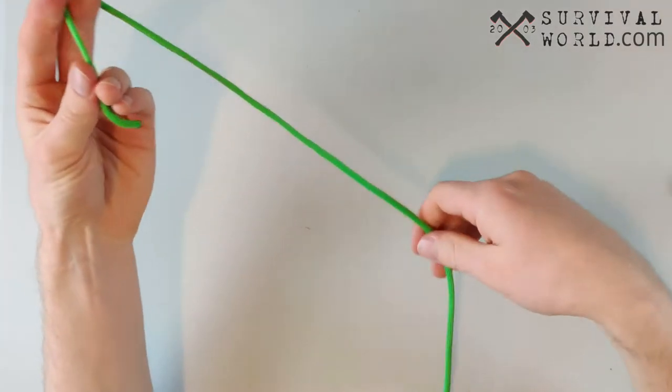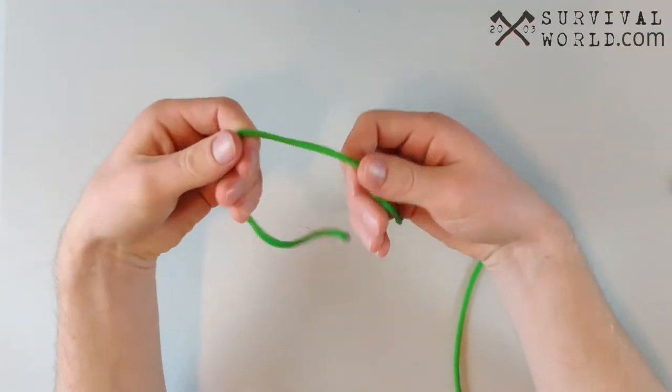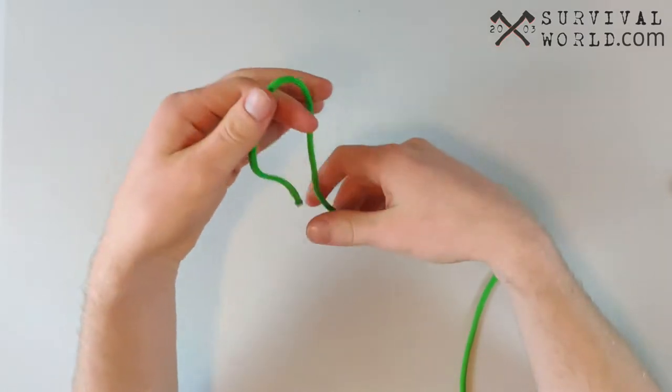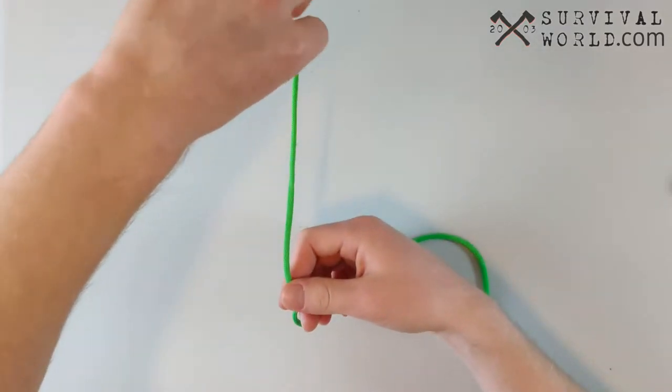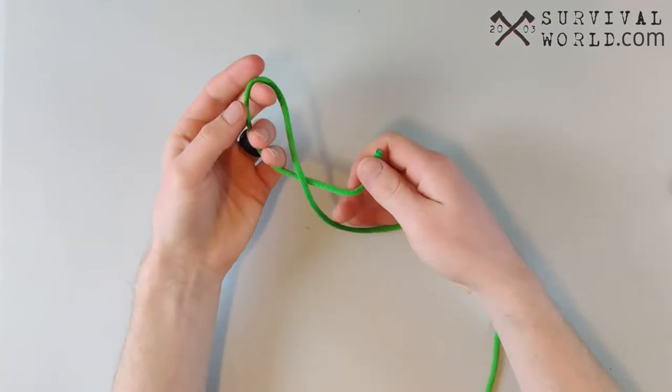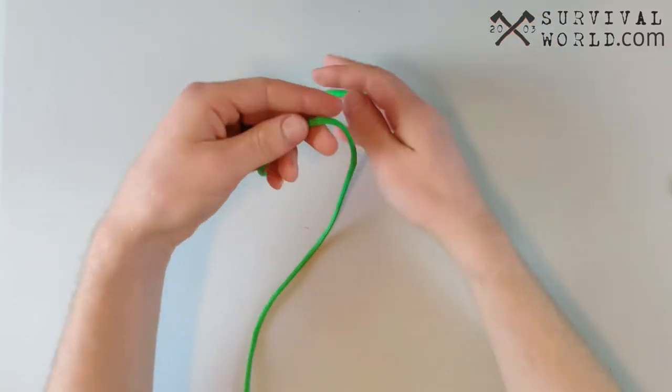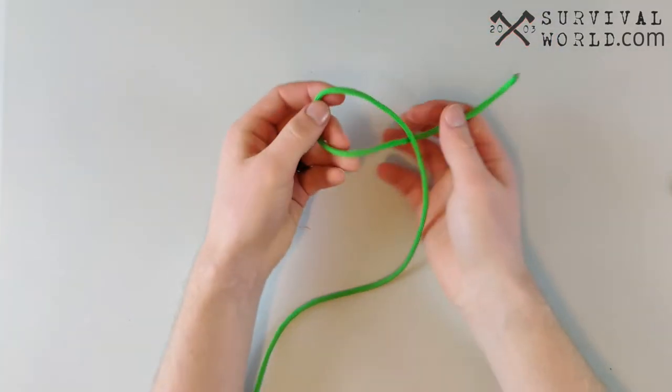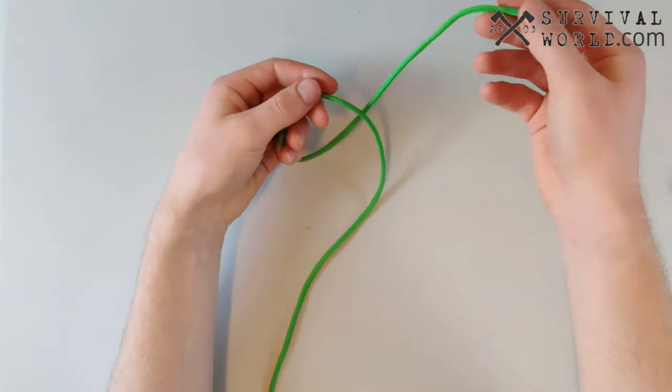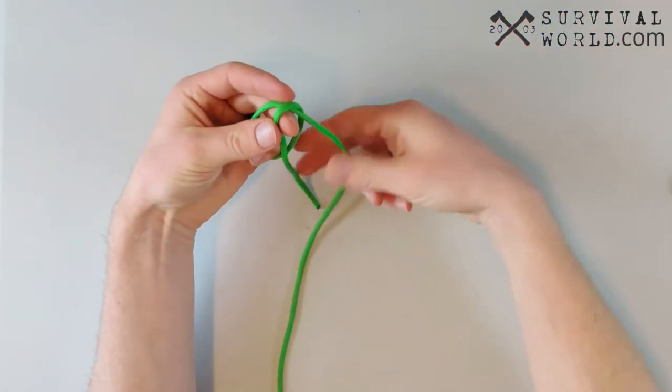So for the single barrel knot we're going to start off with our string here, and we're going to focus on the end because that's normally where you're going to want your barrel knot. What we're going to do is create a loop going around the left side and coming up underneath our rope here, so it's going over the left side, coming underneath, and now we're just going to wrap it around the rope twice.